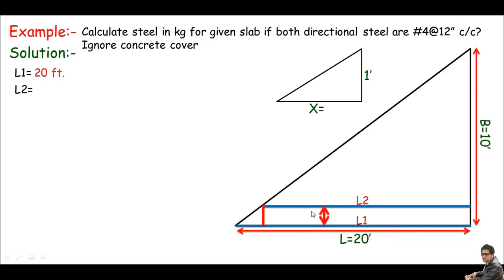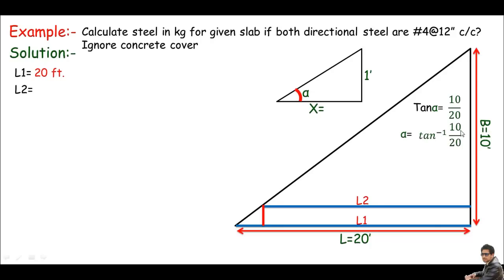The small triangle is not solvable with just one side — I need another component. The angle alpha in the small triangle equals the angle in the larger right triangle. I can find alpha using tangent: tan(alpha) = perpendicular / base = 10 / 20 = 0.5. So alpha = arctan(0.5) = 26.565 degrees.